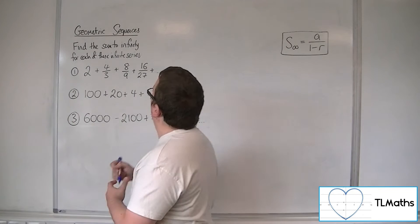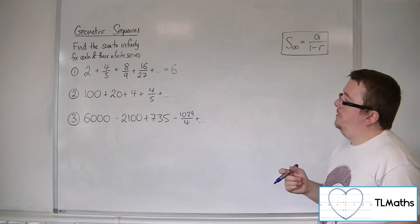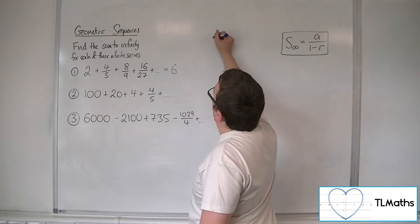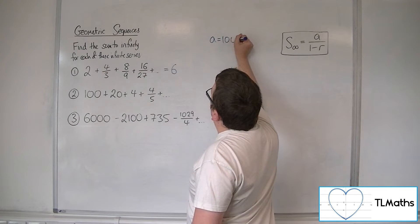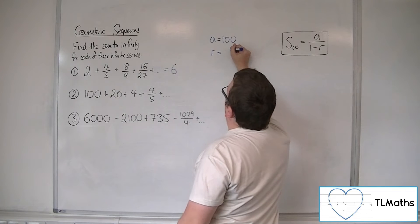Number 2, we've got 100 plus 20 plus 4 plus 4 fifths plus etc. So the first term is 100. The common ratio is 20 divided by 100, so 1 fifth.